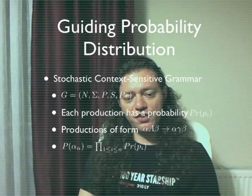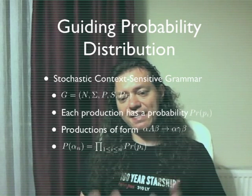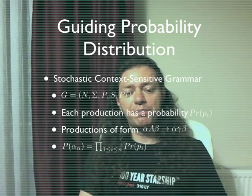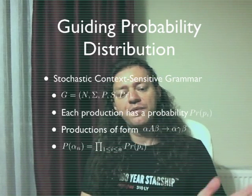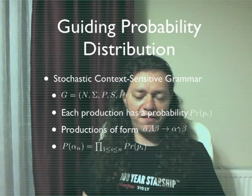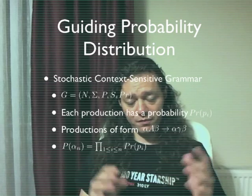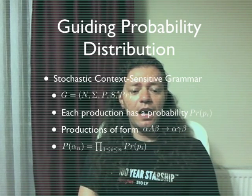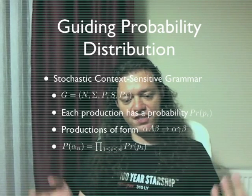The guiding probability distribution is based on stochastic context-sensitive grammar. That is a usual CSG with a probability function over the productions, and those productions are the same form as in CSG. We have a context to the left and right — prefix and suffix of the head non-terminal — which is expanded, preserving the context. And of course we have a consistency rule so that the probability axioms are guaranteed.